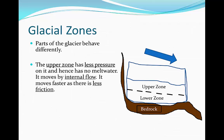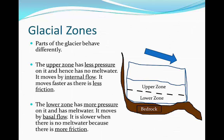The upper zone moves faster as there is less friction exerted on it. Compared to the lower zone, there's more friction because it's moving along the bedrock. The lower zone has more pressure on it and therefore has melt water; it moves by basal flow. It's slower because of the friction exerted on it by the bedrock. However, when it does have melt water, it moves slightly faster because of the reduced friction from the lubricated bedrock. Generally, the upper zone always moves fastest.